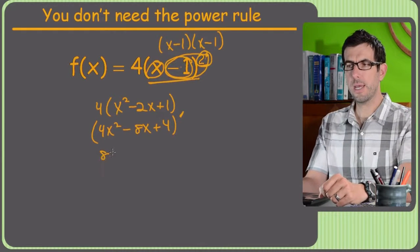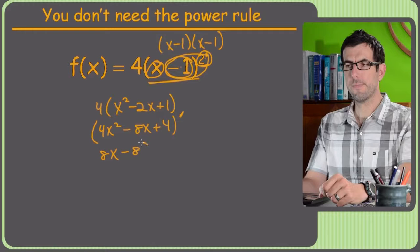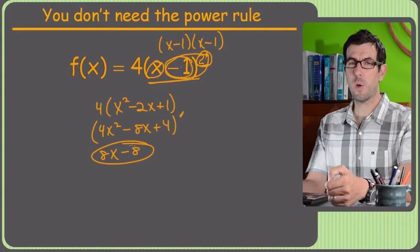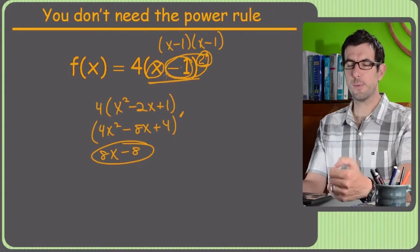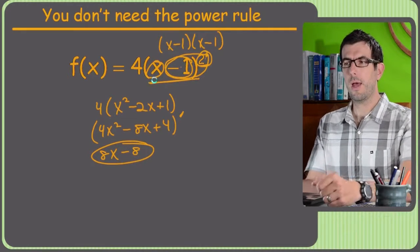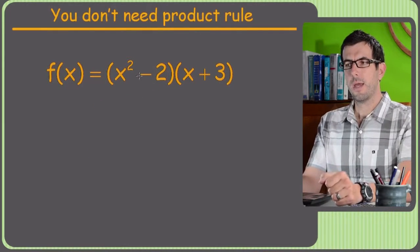And now we've got something we can take the derivative of real easily, because it's polynomial. So by the power rule, there's just 8x minus 8. Not necessarily a ton easier than having done the power rule and the chain rule, but there's other times when it really will save you a boatload of time.